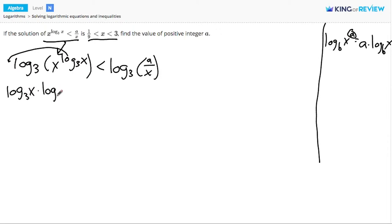Now we have two log base 3 of x's. On the right side I have a fraction inside of the log, and I can use another property for that. If I have the log base b of x over y, that's the same thing as the log base b of x minus the log base b of y. So I can do the same thing over here. Split my log into the log base 3 of a minus the log base 3 of x.